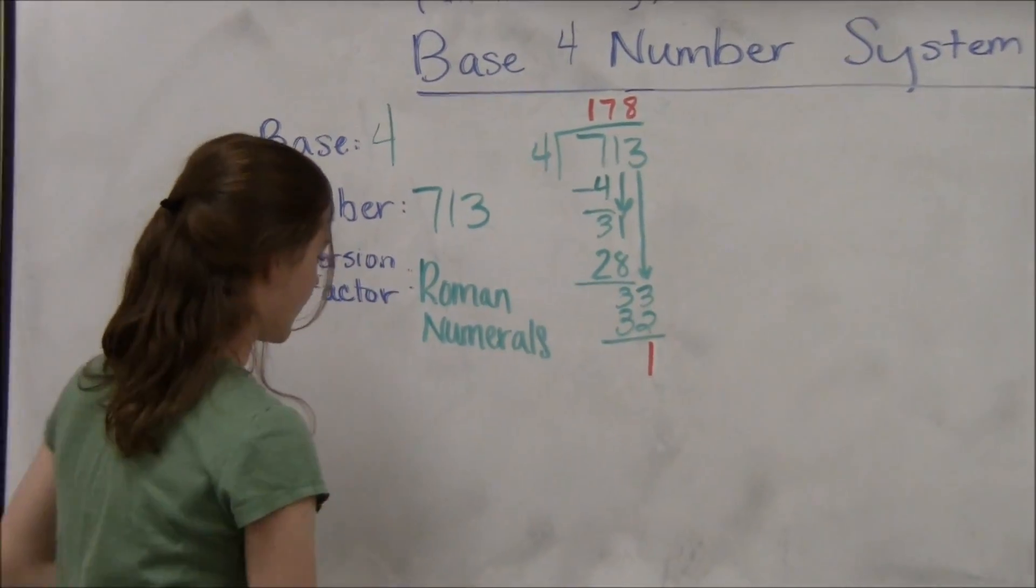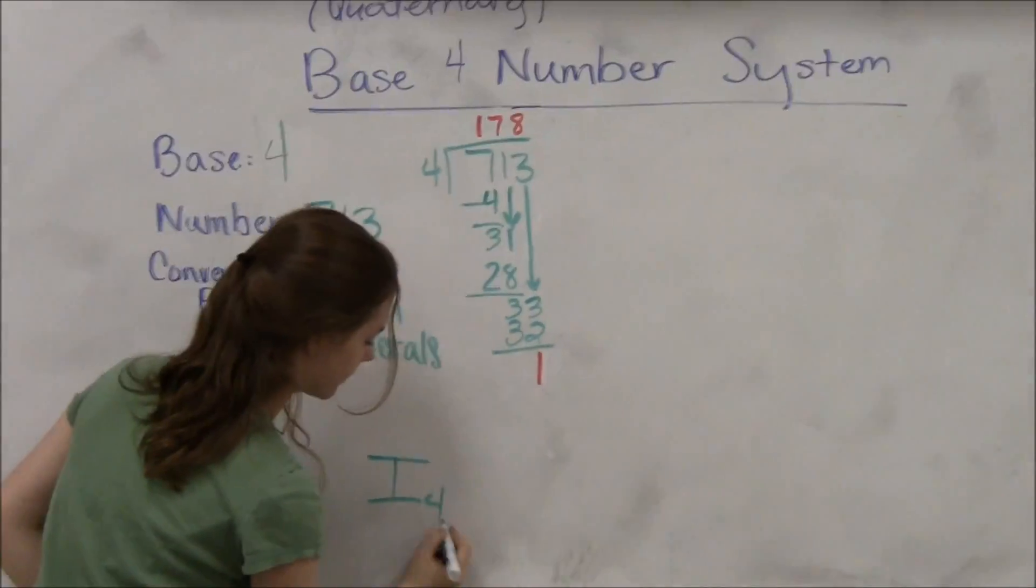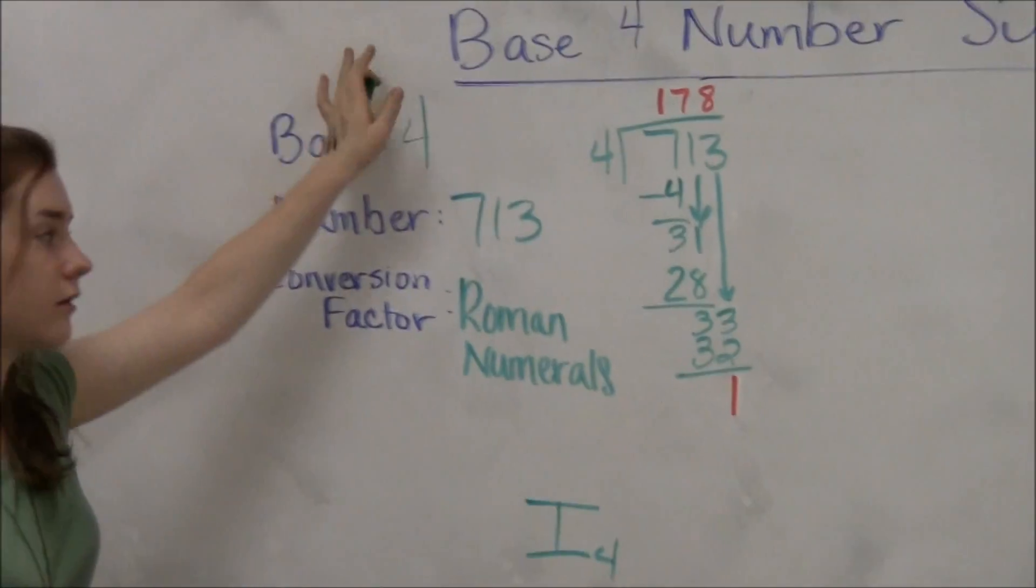Our 1, our remainder, will be turned into a Roman numeral, i, with a base of 4. That's the first term in our quaternary conversion.